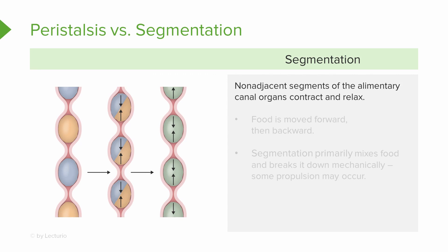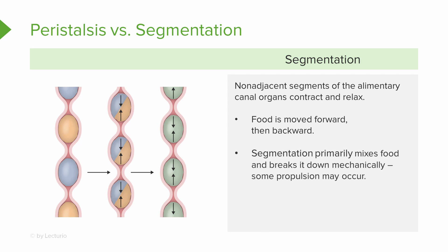Segmentation, on the other hand, is when non-adjacent segments of the alimentary canal are going to contract and relax. Food does move forward, but it also moves backward. The primary function of segmentation is going to be mixing food and breaking it down mechanically, although some propulsion may occur. So peristalsis is mainly for propelling food forward and segmentation is mainly for mixing food through mechanical digestion.